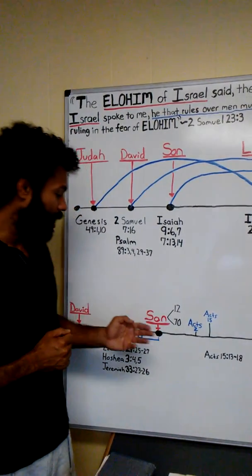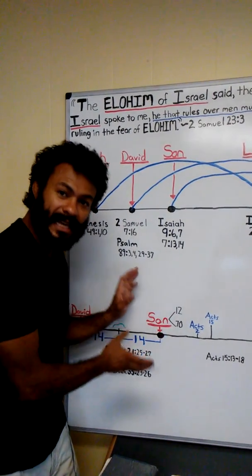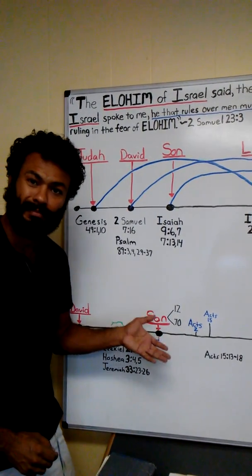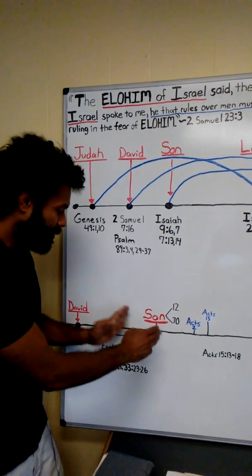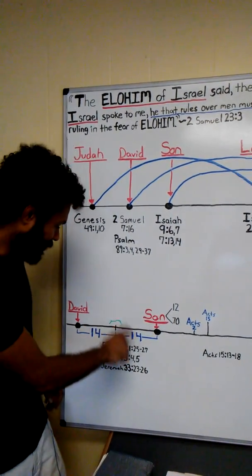He also appointed 70 after the pattern of Moses in Numbers 11, where it says the 70 that Yahuwah would pour his spirit upon them to help take the burden off of Moses. We see that Yahusha Messiah, when he was here, he was establishing his kingdom. He was establishing order right from the beginning of his message. As Isaiah tells us through the root, this...